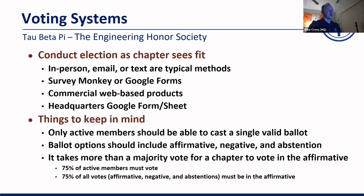To actually hold your vote, you can conduct your election as your chapter sees fit. That's usually done via in-person, but if needed, you could do it via email or text. SurveyMonkey or Google Forms is another good option. There are also several ballot voting web-based products you can use for free. Previously we provided a headquarters Google Forms sheet, but we'll be moving away from that since we didn't see too much use of it. If you need an option, we can try to work that out with you as well.